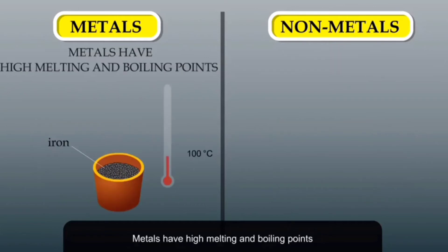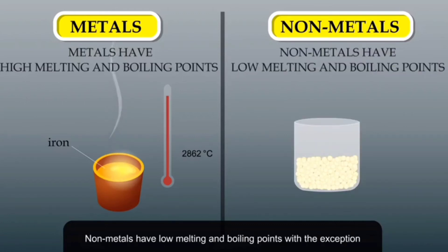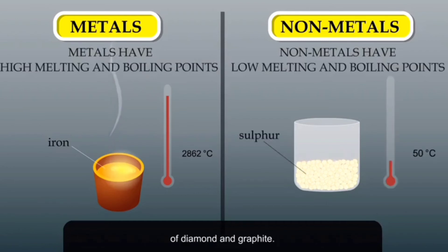Metals have high melting and boiling points. For example, the melting point of iron is 1538 degrees Celsius and boiling point is 2862 degrees Celsius. Non-metals have low melting and boiling points, with the exception of diamond and graphite. For example, the melting point of sulfur is 115.2 degrees Celsius and boiling point is 444.6 degrees Celsius, which are low compared to those of metals.